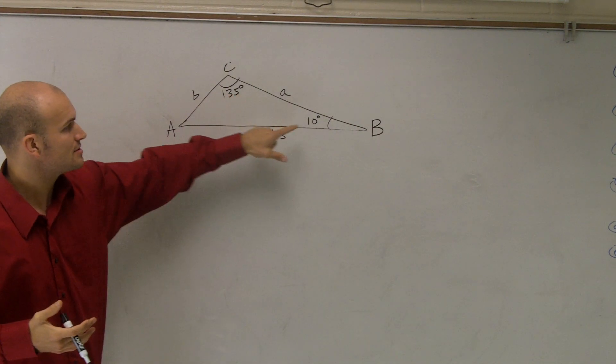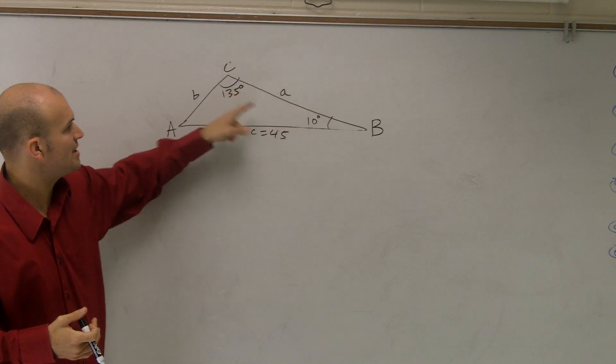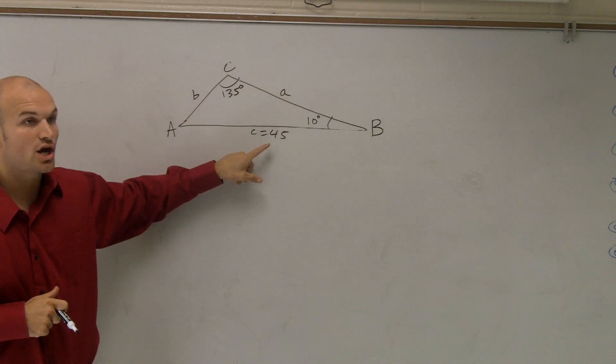I'm given two angles. I'm given the angle for B, or the measure of angle B, the measure of angle C, and also the side C.